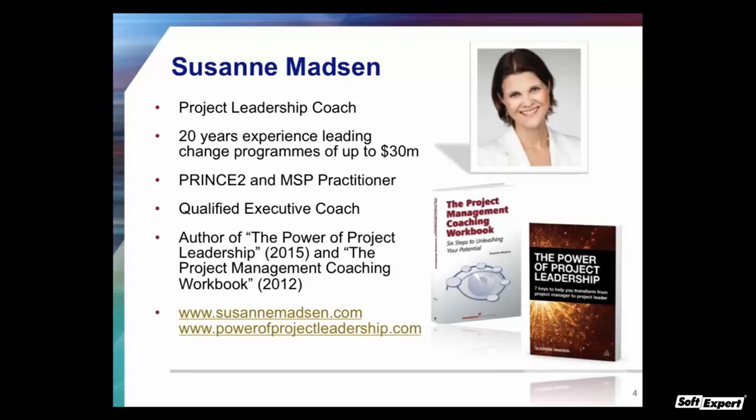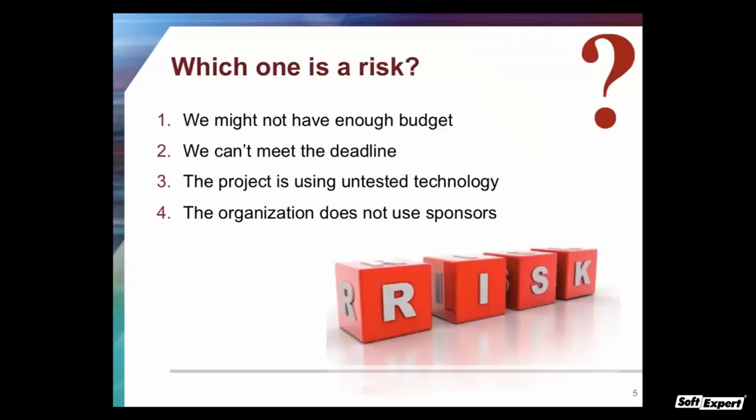The first question — which one of these is a risk? Is it number one: we might not have enough budget? Number two: we can't meet the deadline? Number three: the project is using untested technology? Or number four: the organization does not use sponsors? Many people are saying number three, the project is using untested technology — but that's actually wrong. Only one of these is a risk, and it is not number three.